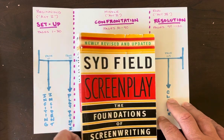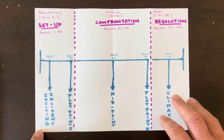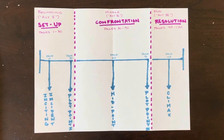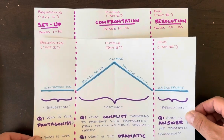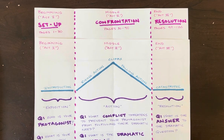So when we look at this diagram of Field's paradigm of cinematic structure, you will notice it has some strong similarities to this diagram of dramatic structure from my earlier video that combines concepts from the excerpts we read from Aristotle's 'Poetics' and Freytag's 'Technique of the Drama.'